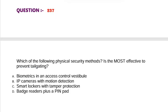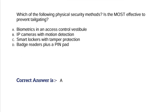Question: Which of the following physical security methods is the most effective to prevent tailgating? Option A, biometrics in an access control vestibule. Option B, IP cameras with motion detection. Option C, smart lockers with tamper protection. Option D, badge readers plus a PIN pad. Correct answer is Option A.